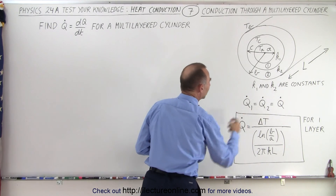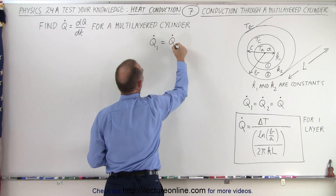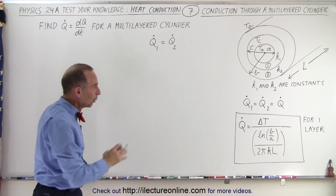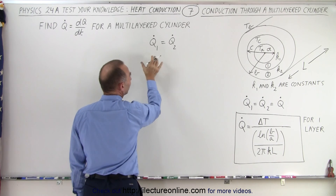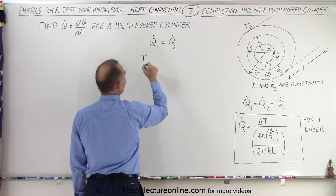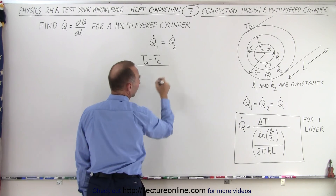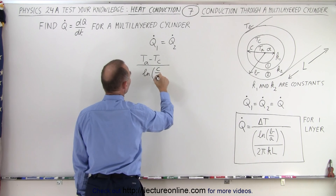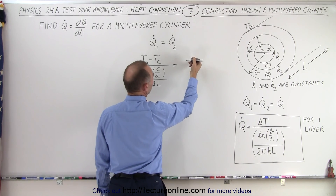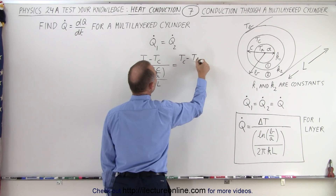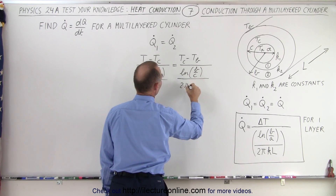We know that Q dot 1 must equal Q dot 2, so let's start with that principle. Q dot 1 equals the delta T between the inner layer and the boundary — that is, the difference in temperature between TA and TC — divided by the natural log of C over A, all divided by 2 pi K1 L. And that equals the difference in temperature for the second layer, TC minus TB, divided by the natural log of B over C, divided by 2 pi K2 L.